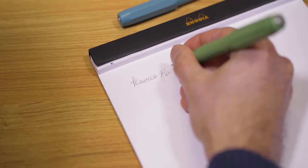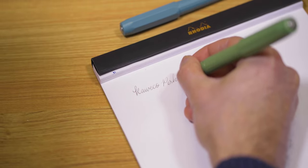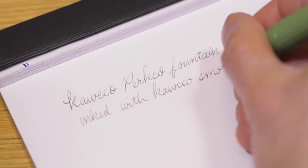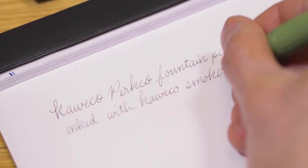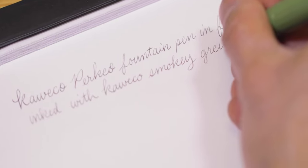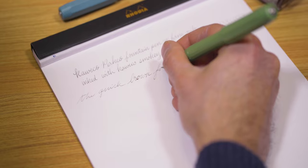Unlike its German competitor, the Lamy Safari, the Kaweco Perkeo has a tighter, more controlled line. The fine nib is true to its name, laying down a drier 0.5 millimeter line while the medium operates at a slightly thicker and wetter 0.7 millimeter line, approximately.